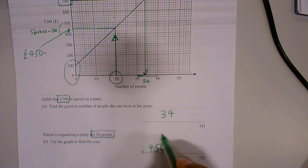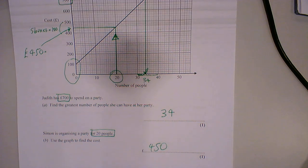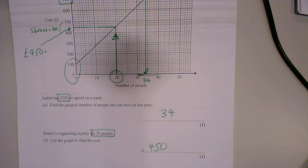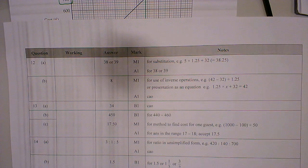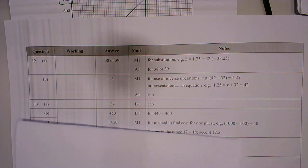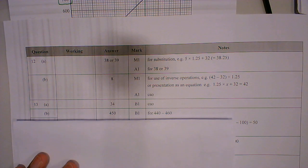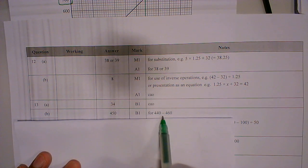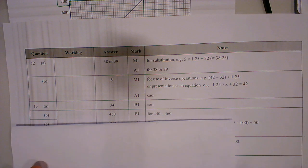Now, sometimes there's a margin of error allowed for this type of question. Let's look at the mark scheme. You can see here, you are allowed a little bit of margin of error. If you wrote 440 to 460, you would get a method mark.